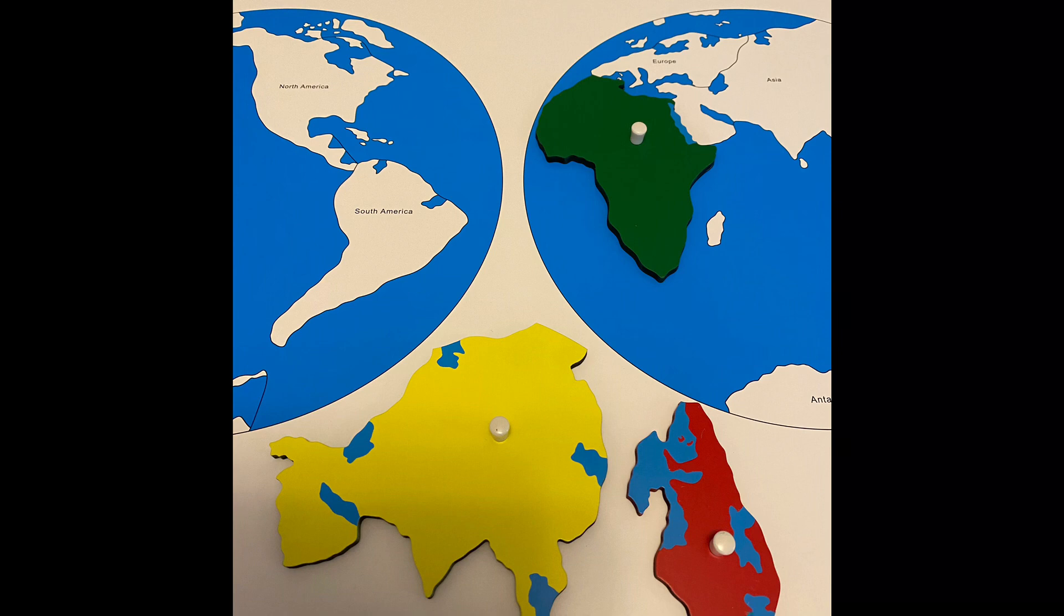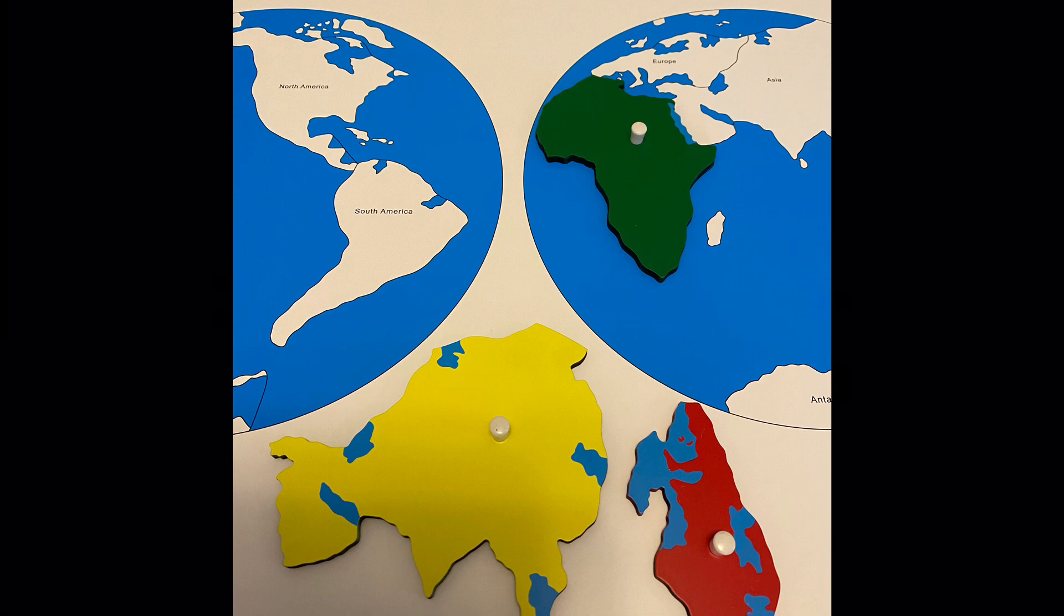Next, do the opposite by having the child point to one of the continents on the map and find the same continent on the globe. Let the child do the same thing for the remaining continents.